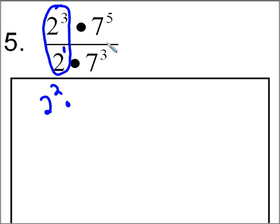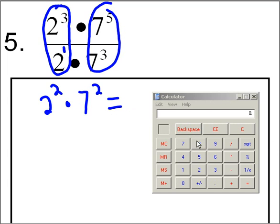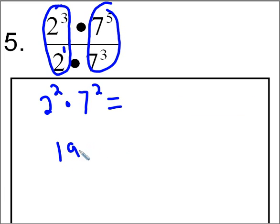I'm going to take that times, and I'm going to do the same thing here but with the base of seven. I'm going to take five minus three, and I'm going to get seven to the second power. Now I'm going to finish the problem up in my calculator. I can't do powers on my calculator, but what I can do is repeated multiplication. So I'm going to do two times two, and then take that answer times seven times seven equals. My final answer is 196.